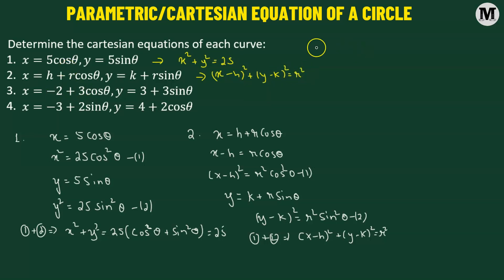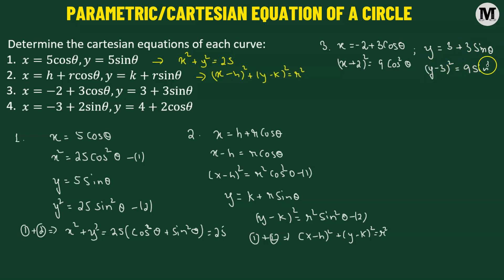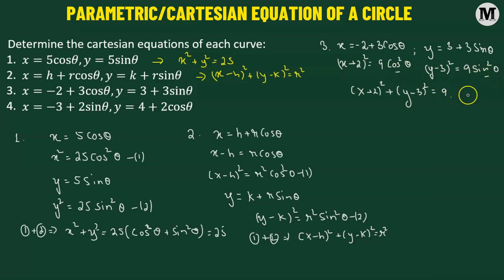For problem number 3, we are given x equals negative 2 plus 3 cosine theta, which gives x plus 2 whole squared equals 9 cosine squared theta. Then y equals 3 plus 3 sine theta gives y minus 3 whole squared equals 9 sine squared theta. Adding these together, x plus 2 whole squared plus y minus 3 whole squared equals 9 times cosine squared theta plus sine squared theta, which equals 9 by the Pythagorean identity.